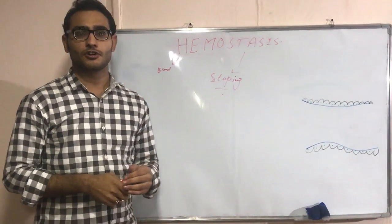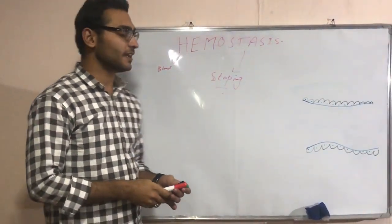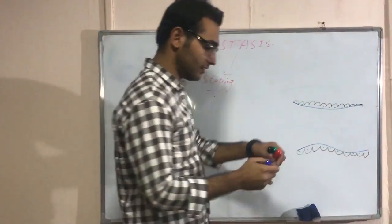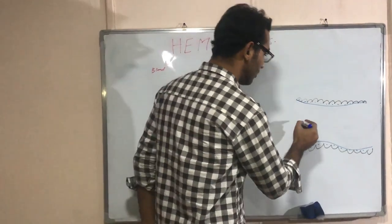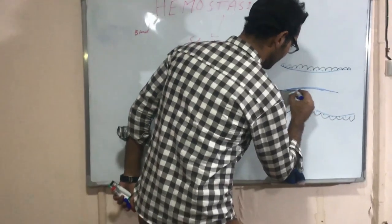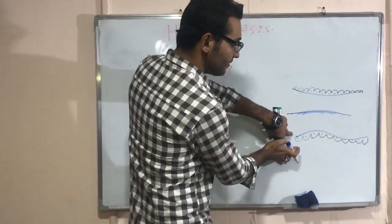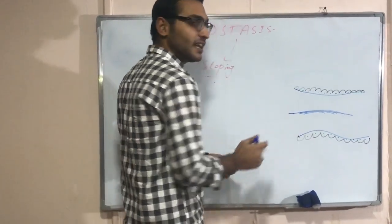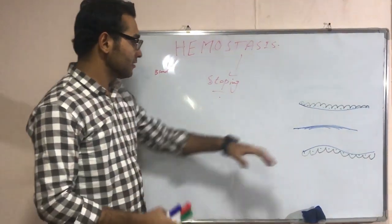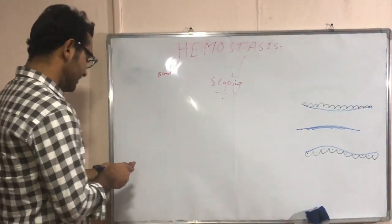For this process we should know about the normal blood flow in the vessel. The normal blood flow in a vessel is laminar flow. Here is the blood vessel — these are the endothelial cells in the vessel, and these cells release some chemicals that maintain the normal flow of the blood.